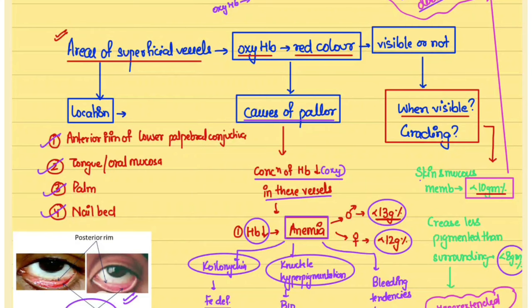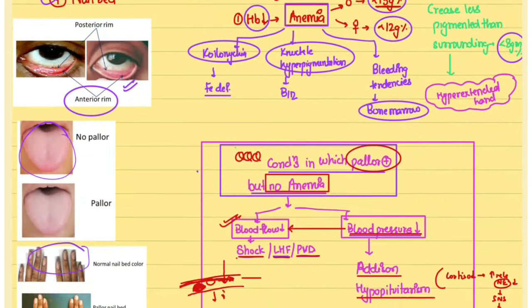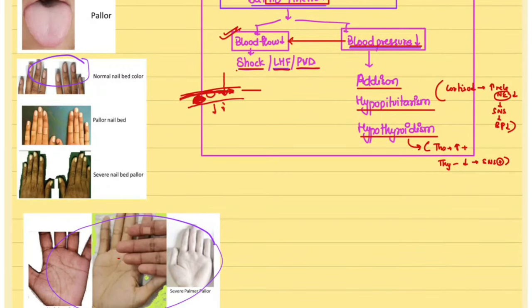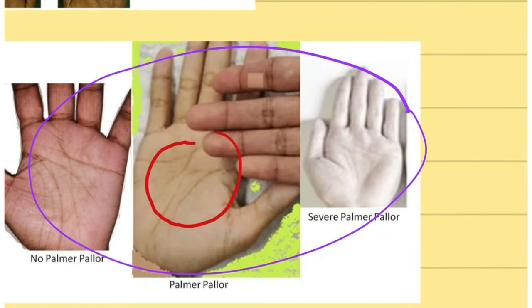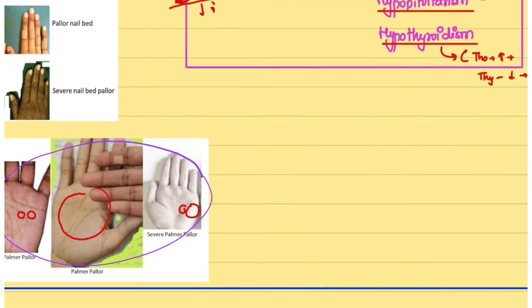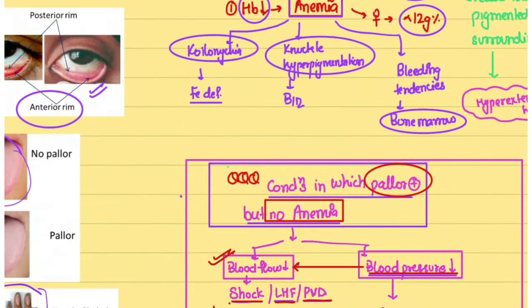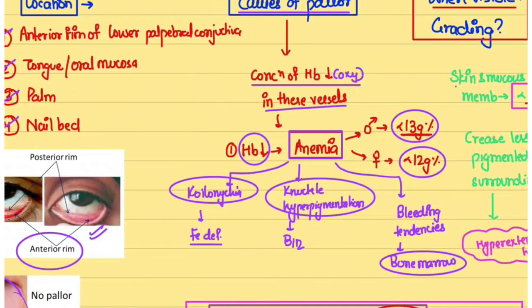When looking for pallor of the palm creases, normally the pigmentation over the creases is greater than the surrounding skin. If the pigmentation over the palm creases becomes less than or equal to the surrounding skin, we consider it severe pallor, indicating a probable hemoglobin level of less than 8 g%.